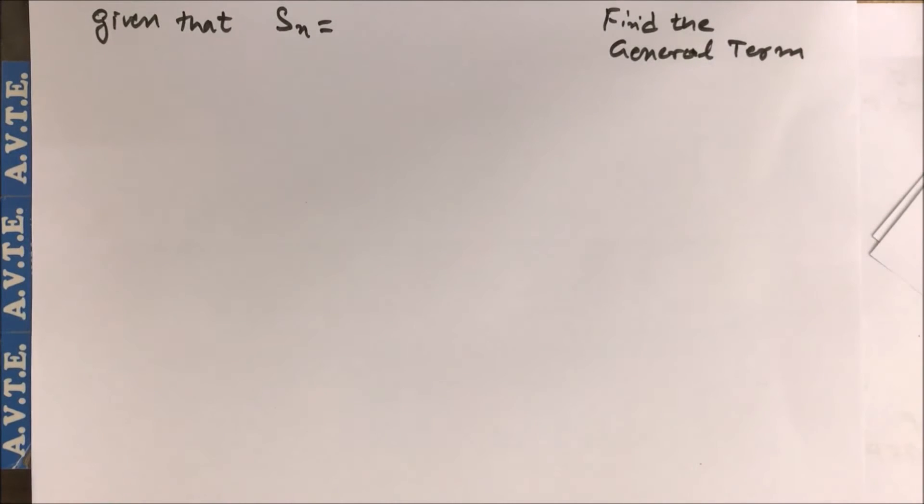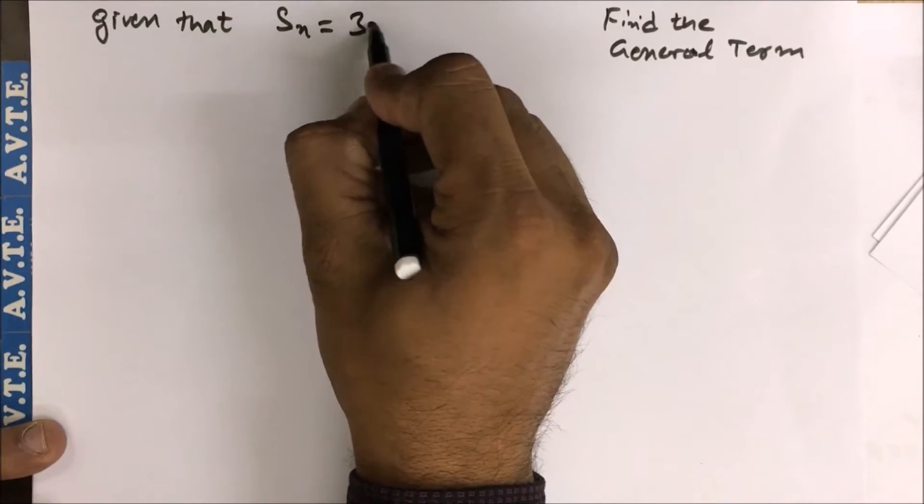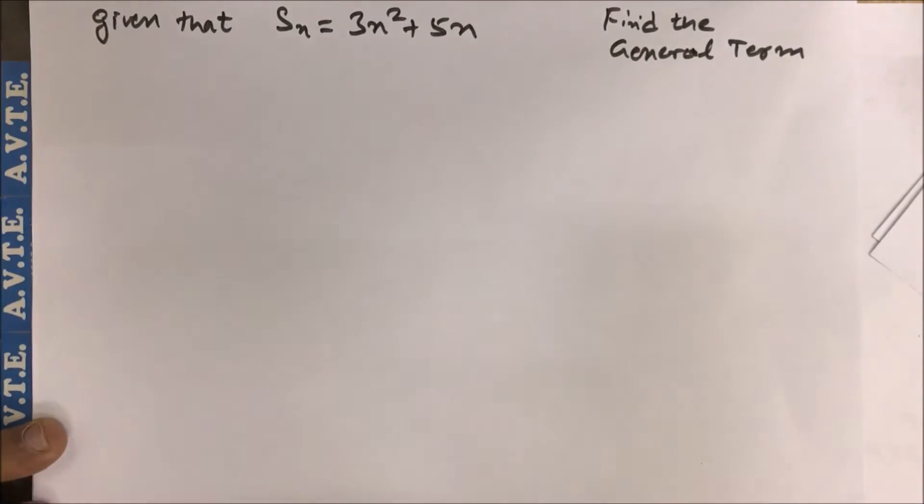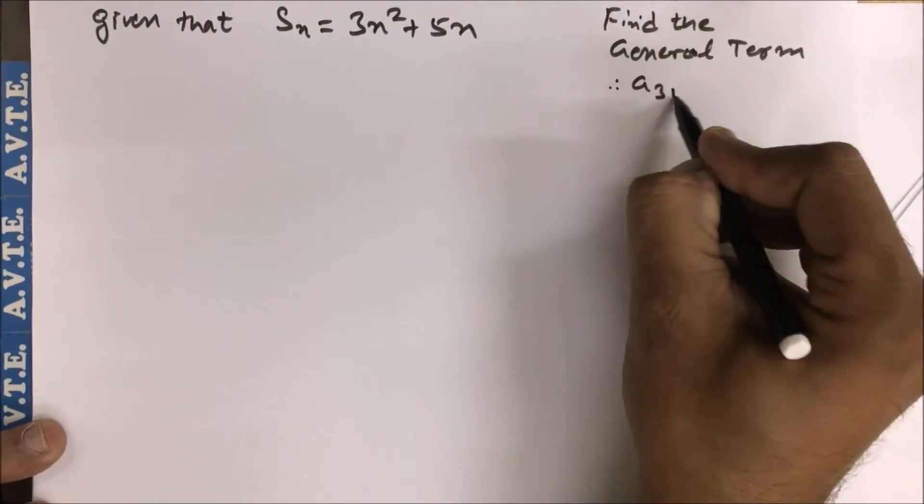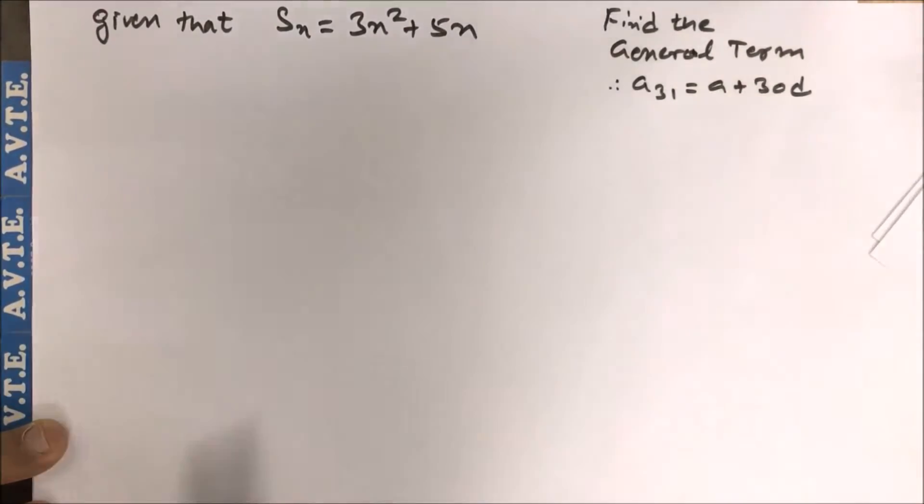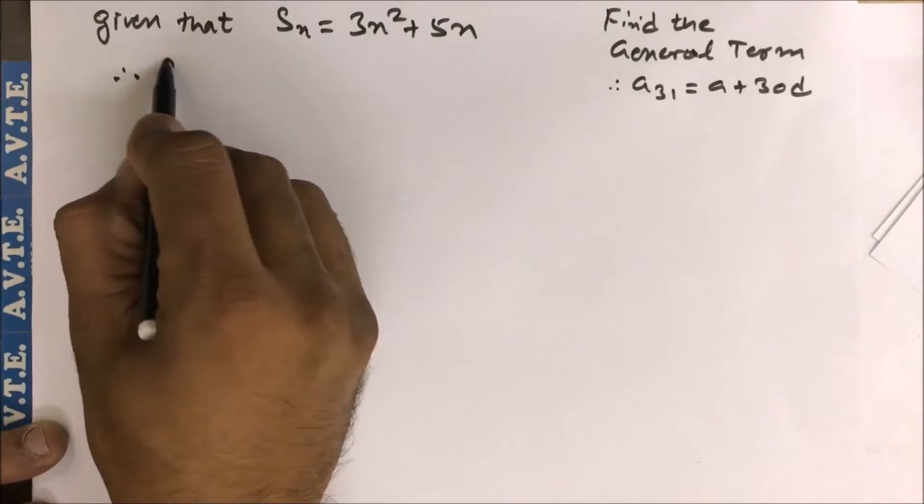Hello friends, today we talk about sum of terms is given 3n square plus 5n and you have to find a general term. Let's say you have to find the 31st term, that is a plus 30d.